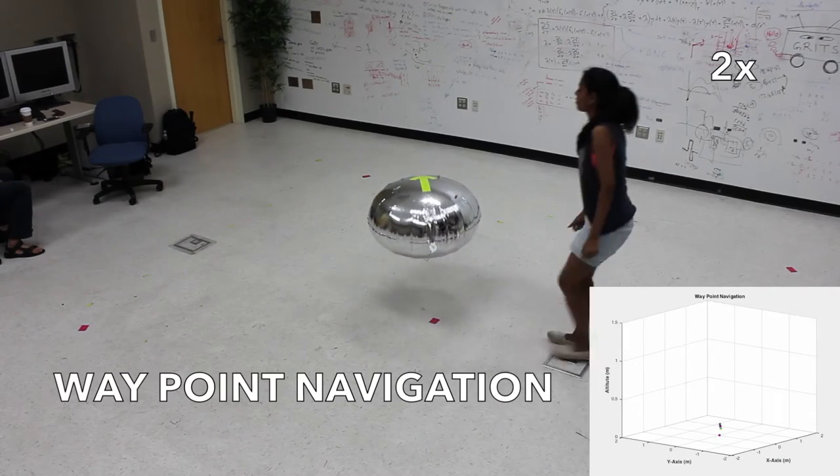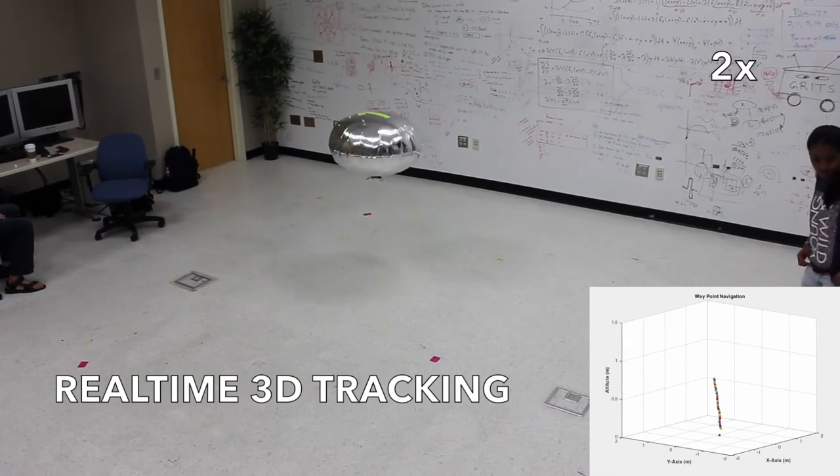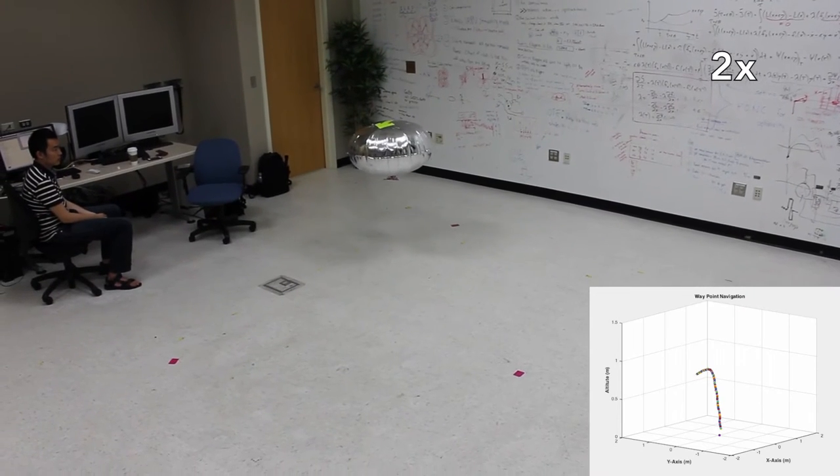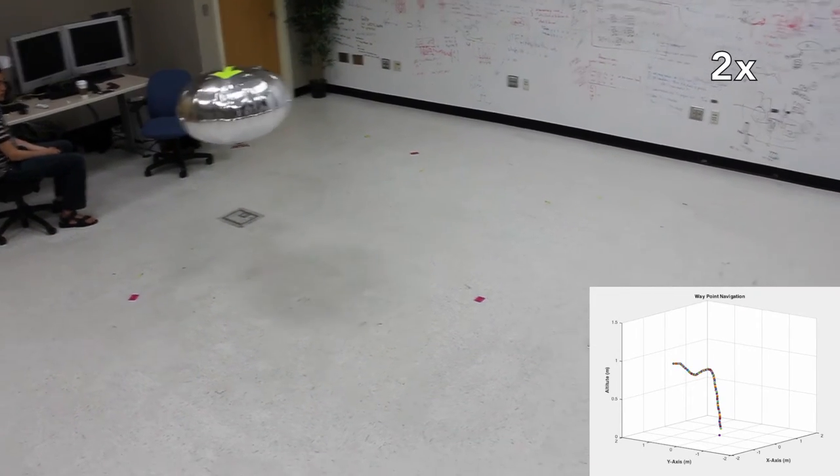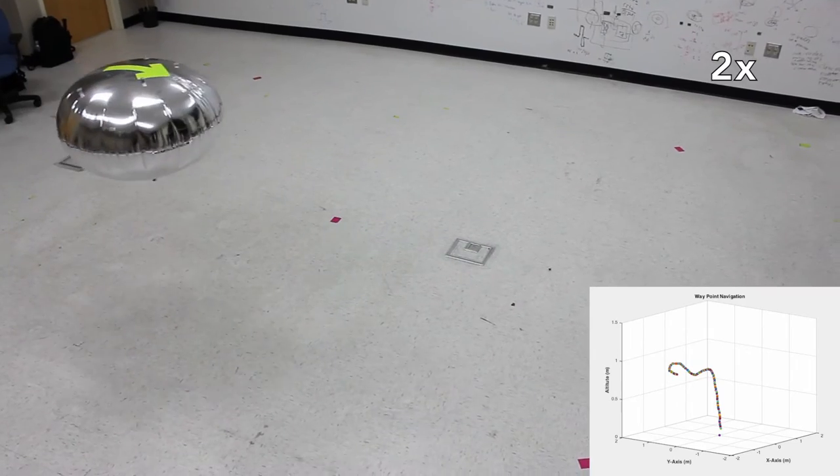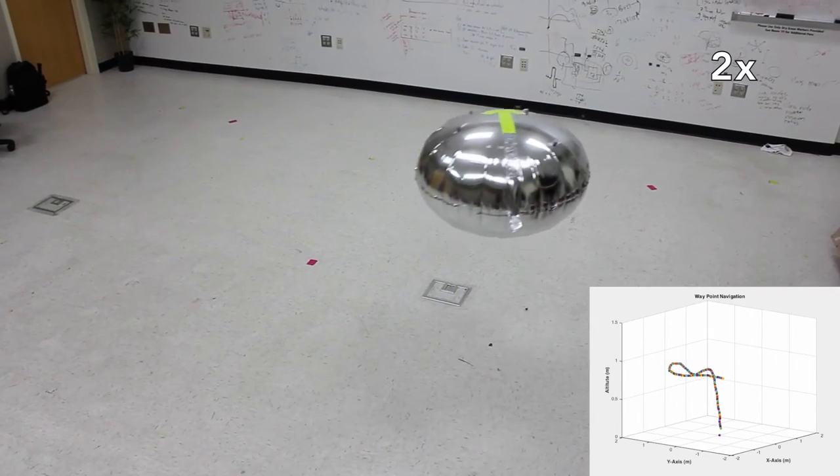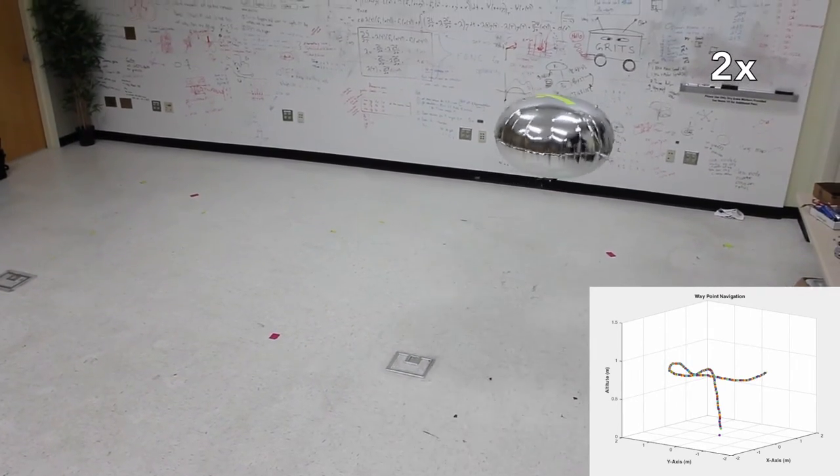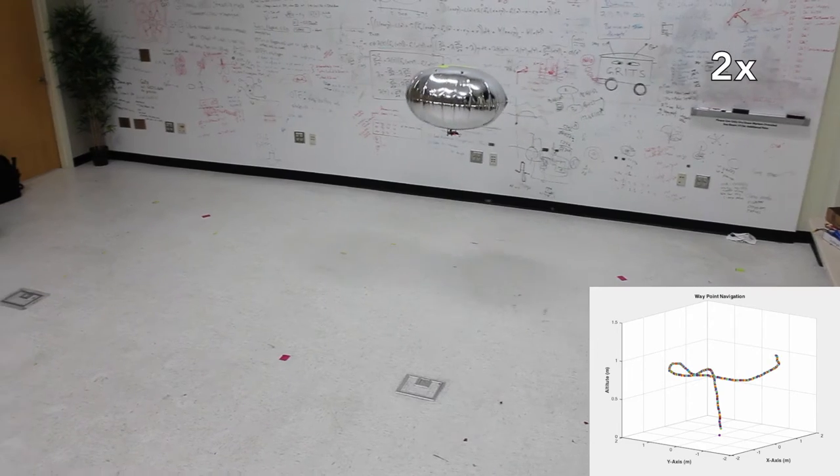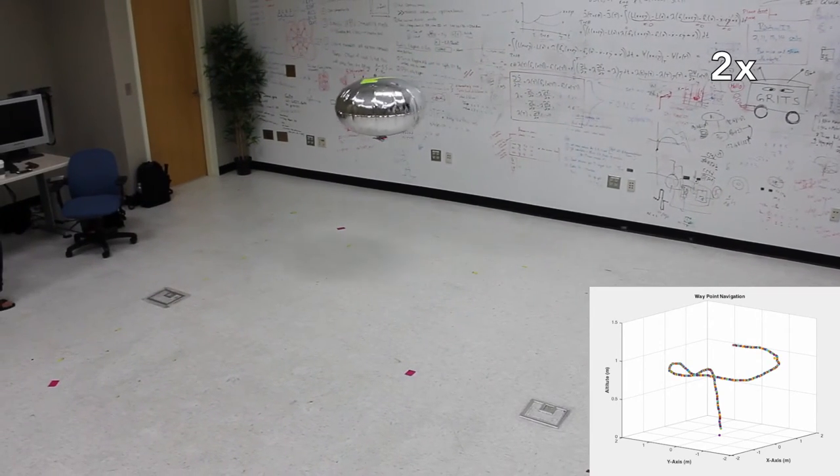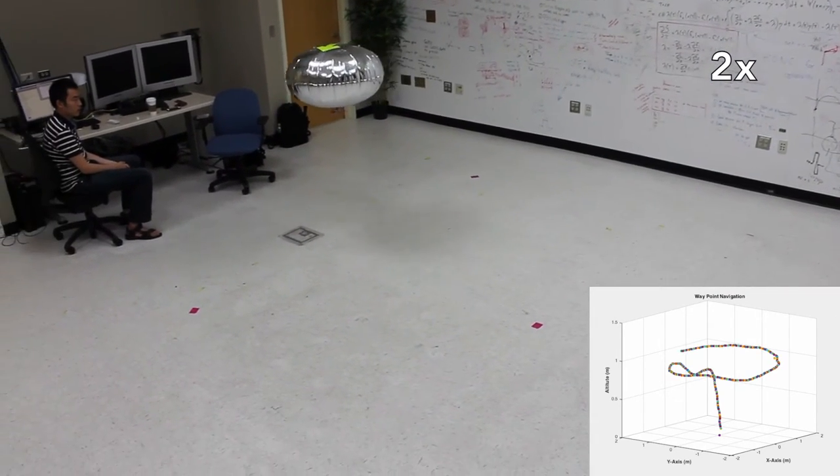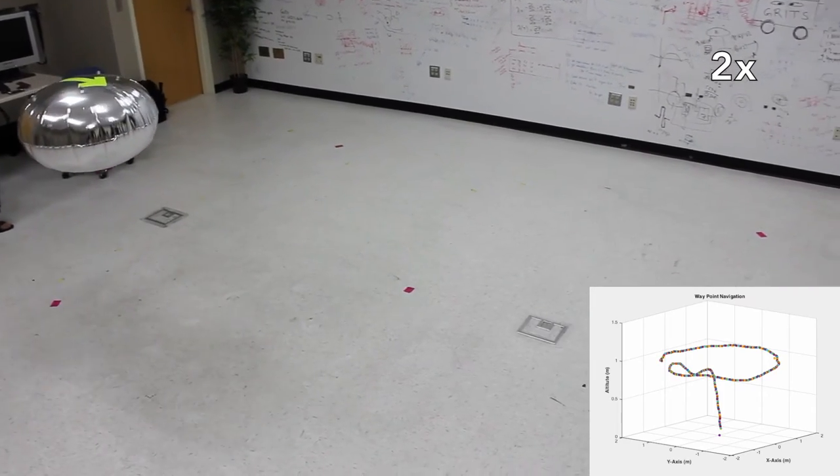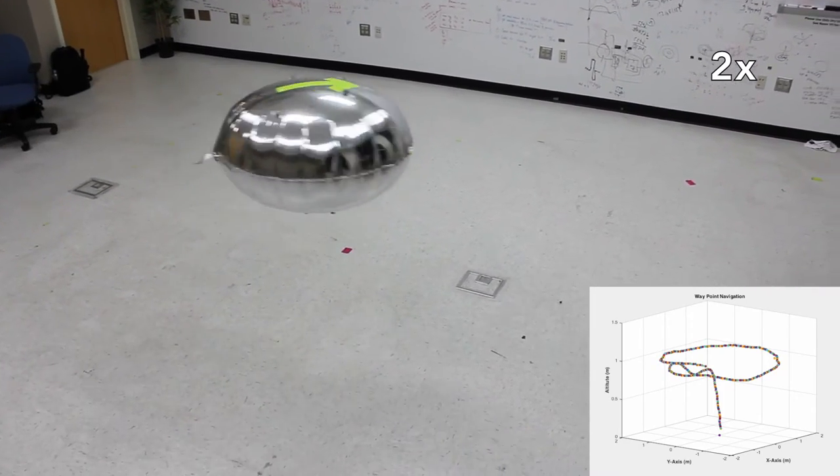When we design any source-seeking algorithm, the first assumption we make is that the robot or drone we are using is fully maneuverable. We want the robot to be able to go to any possible location on the search space which the algorithm decides as the next step. So we test the maneuverability of the blimp using waypoint control, in which the blimp is given some waypoints and has to travel to each of these waypoints in a pre-specified order.